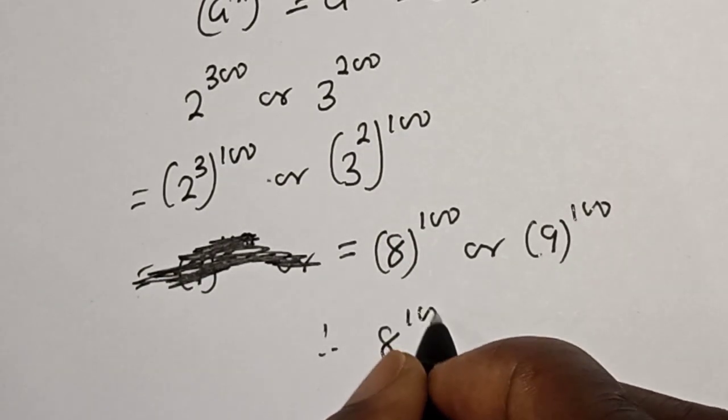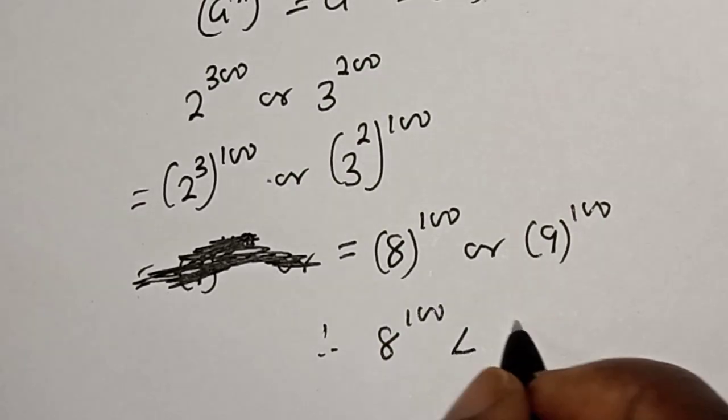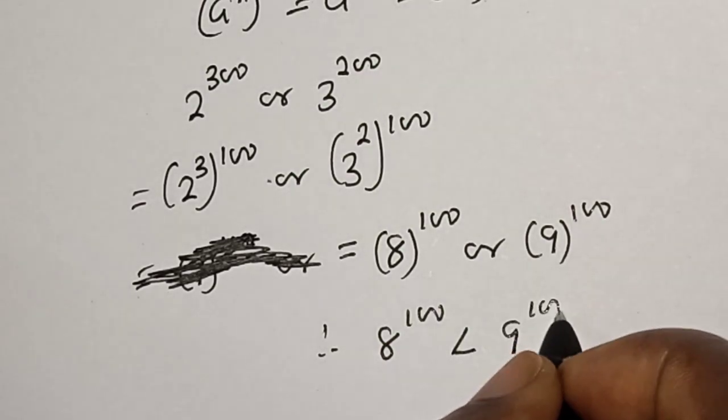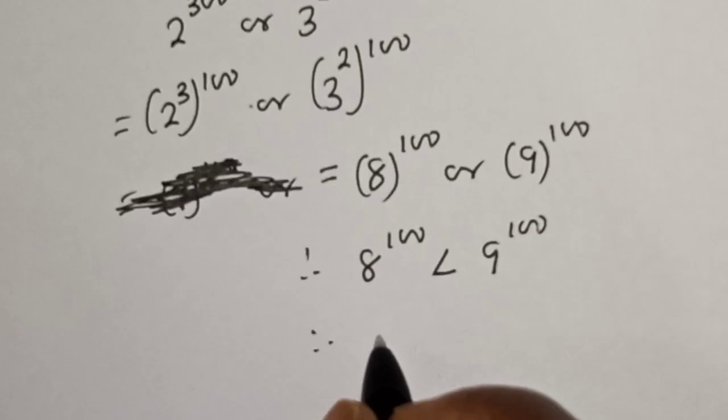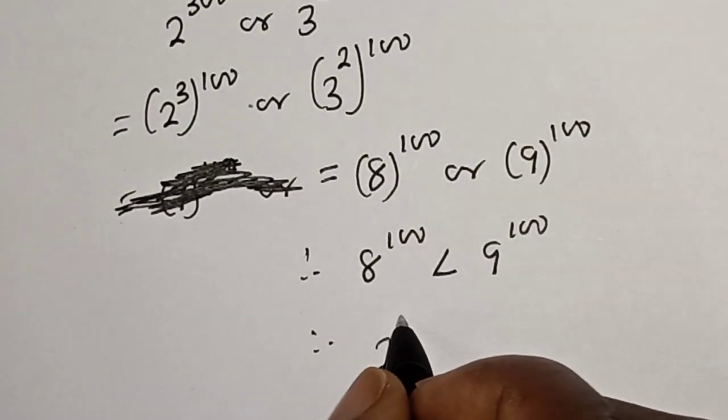8 raised to power 100 is less than 9 raised to power 100, so therefore 2 raised to power 300 is less than 3 raised to power 200.